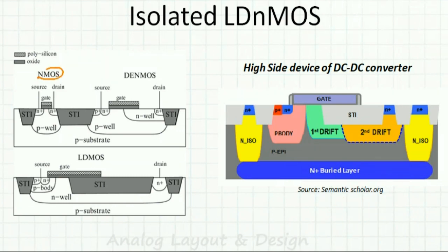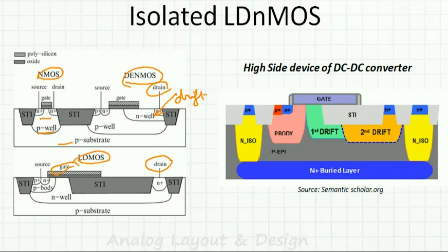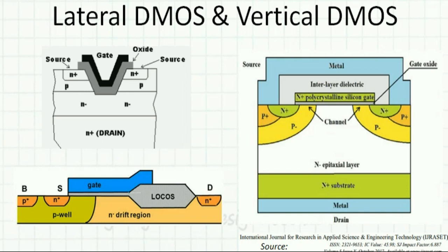Looking at a cross-section comparison: the NMOS has a P-substrate with a P-well containing a symmetric device. In LDMOS, the drain is much further from the gate with a larger drift region, and in between there is also an HTI (high-voltage trench isolation). This makes the LDMOS suitable for very high voltages, such as 35V or 50V transistors.